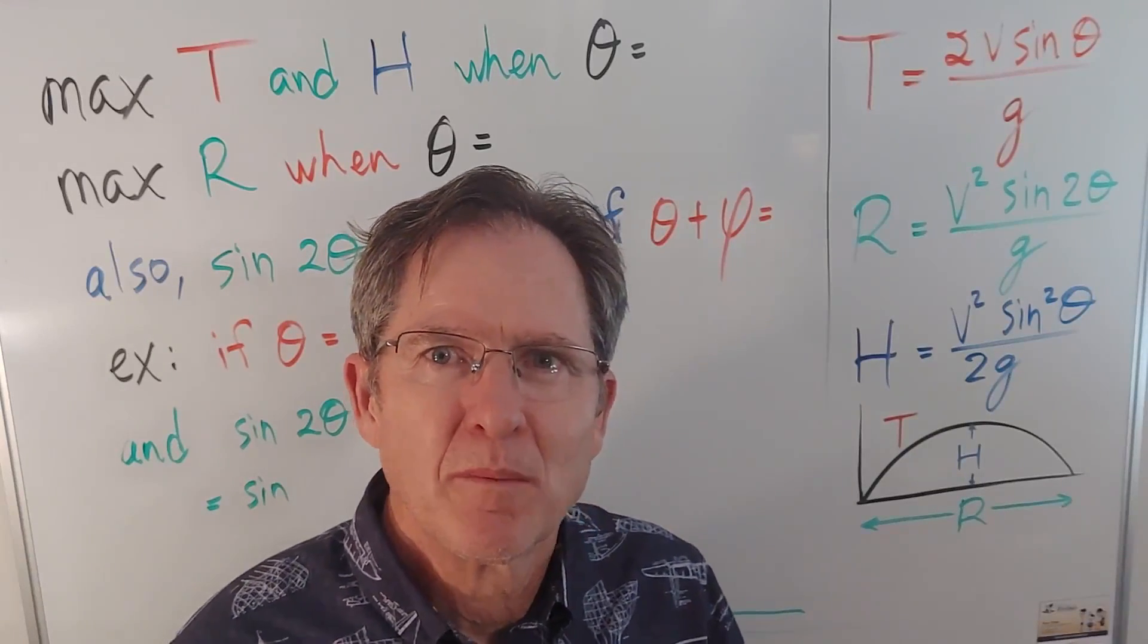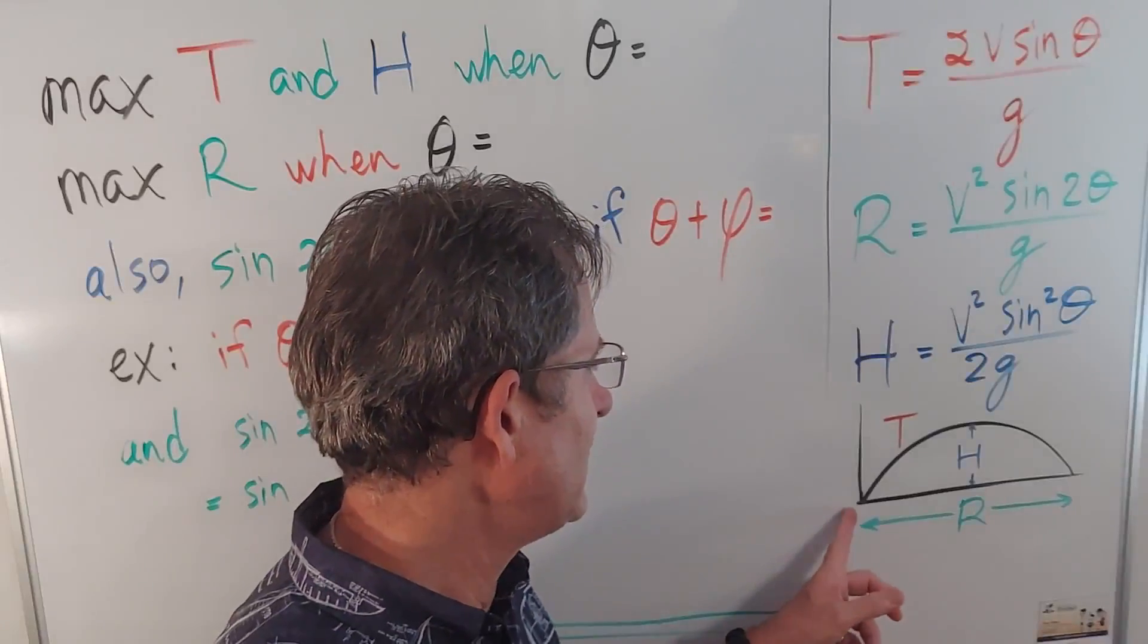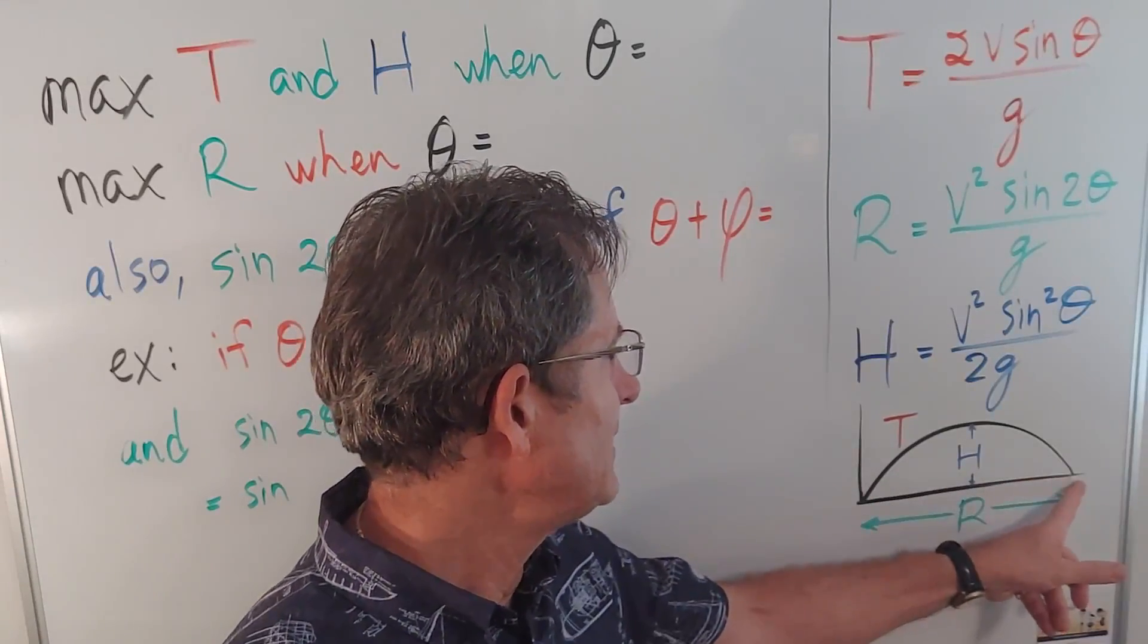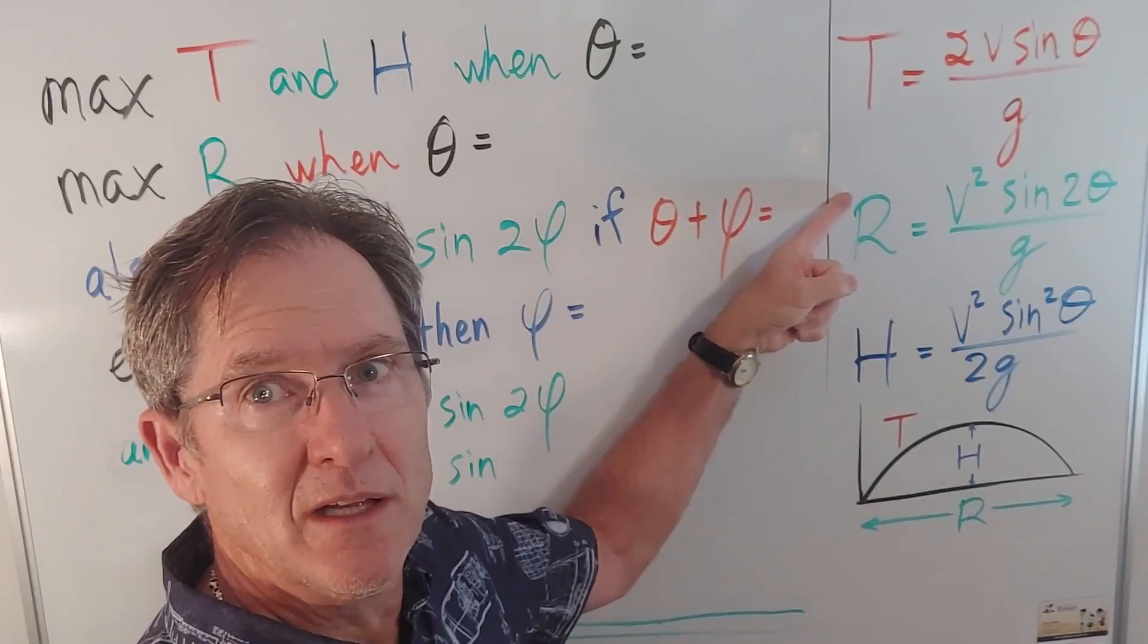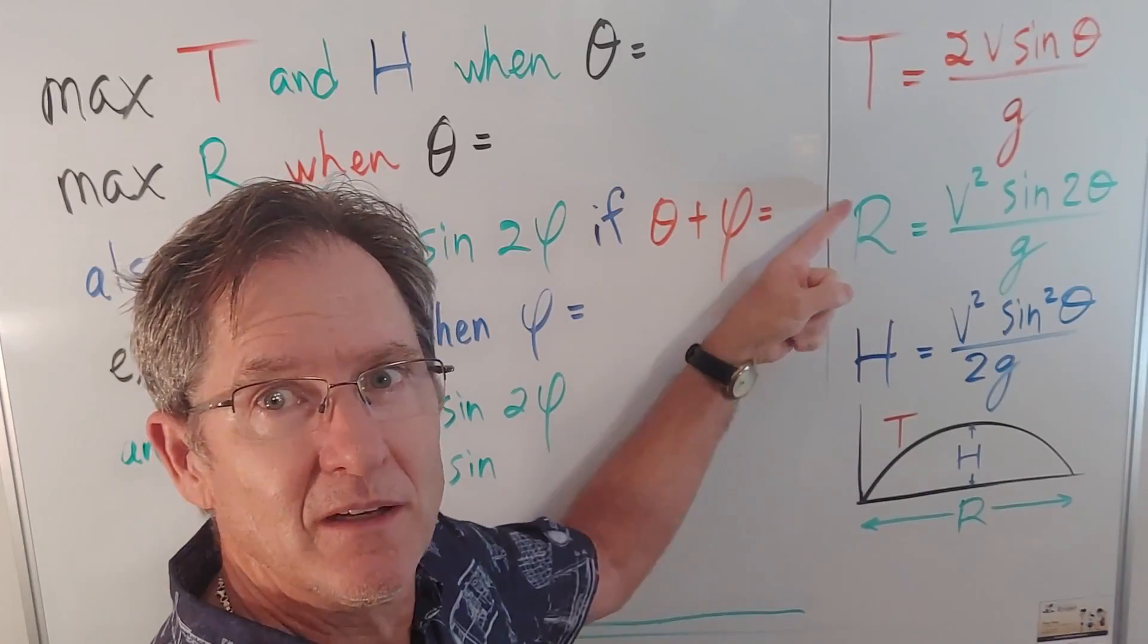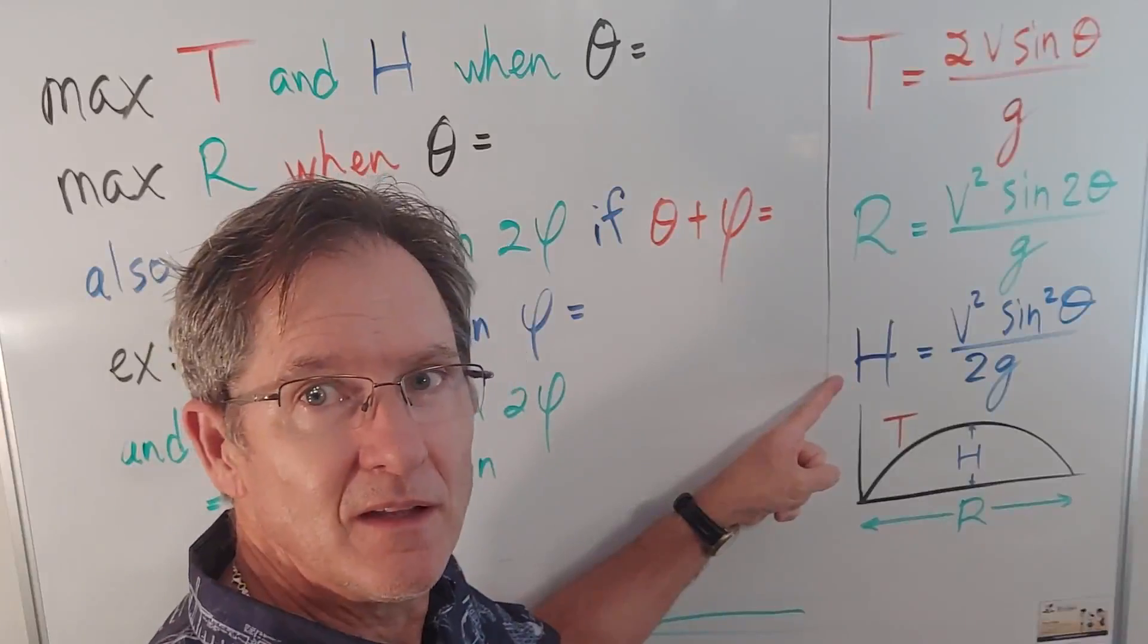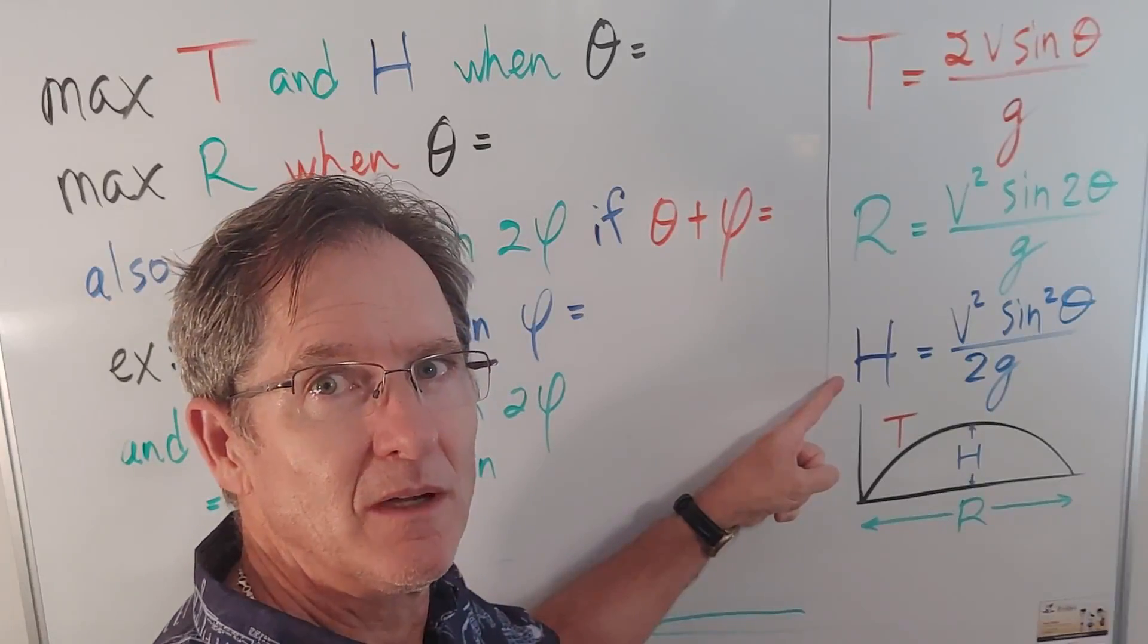If you are familiar with the formulas by now, when something is launched and lands at the same height, the time in the air is given by that, the range or the horizontal distance given by that, and the height is given by that formula right there.